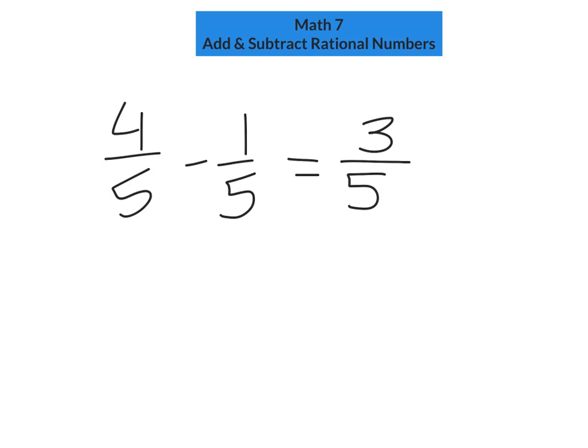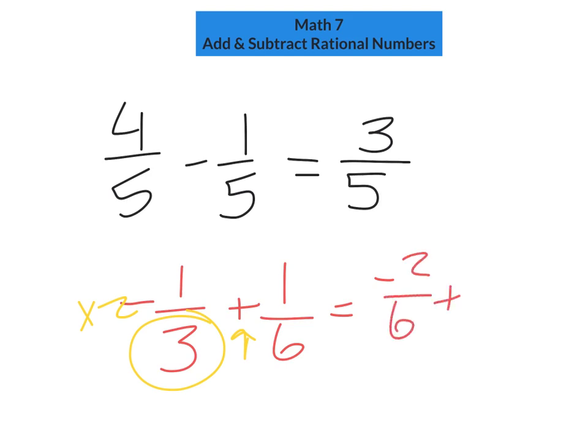If I were to do negative 1/3, this you guys should have already written in your journals, plus 1/6, the first thing you have to do is get a common denominator because you're adding. So how do I change the 1/3? Multiply by 2. Multiply everything times 2. So I'm going to get negative 2/6 plus 1/6. The denominator stays the same. What's negative 2 plus 1? That's 3. No, negative 2. Oh, 1.